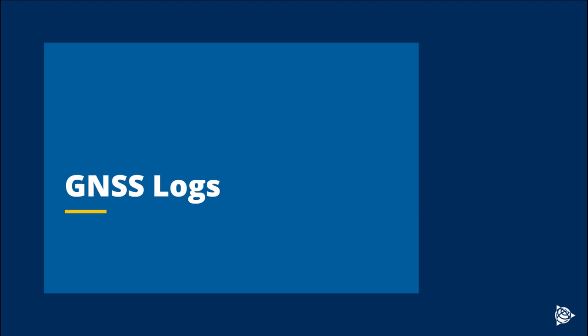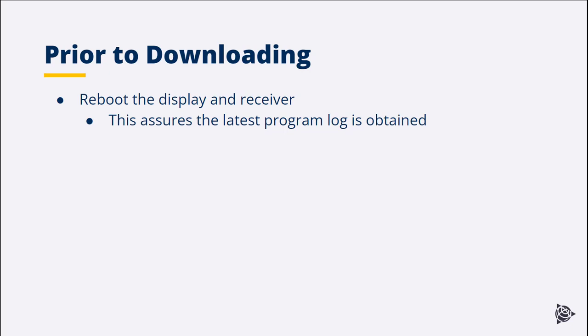The following steps outline the process to download GNSS logs. Begin by inserting a USB drive into the display. Prior to downloading Precision IQ logs, it is typically recommended that the display and receiver be rebooted. The reboot assures that the latest program log from the receiver is obtained by the display before the export occurs.